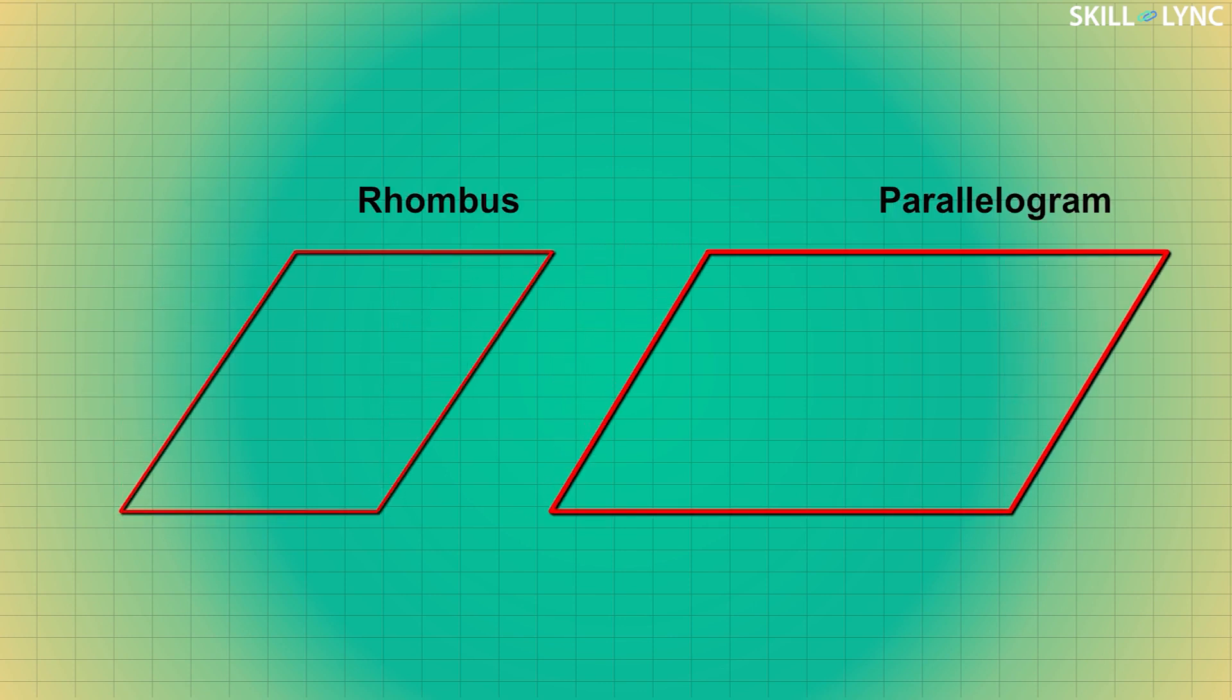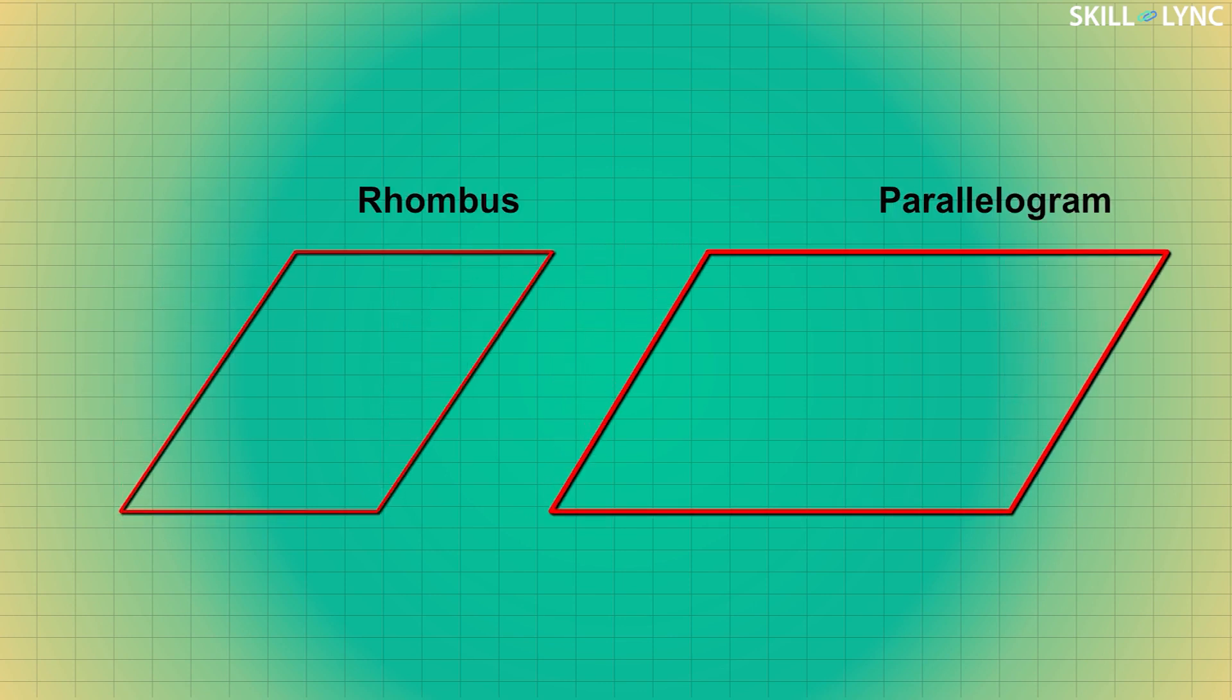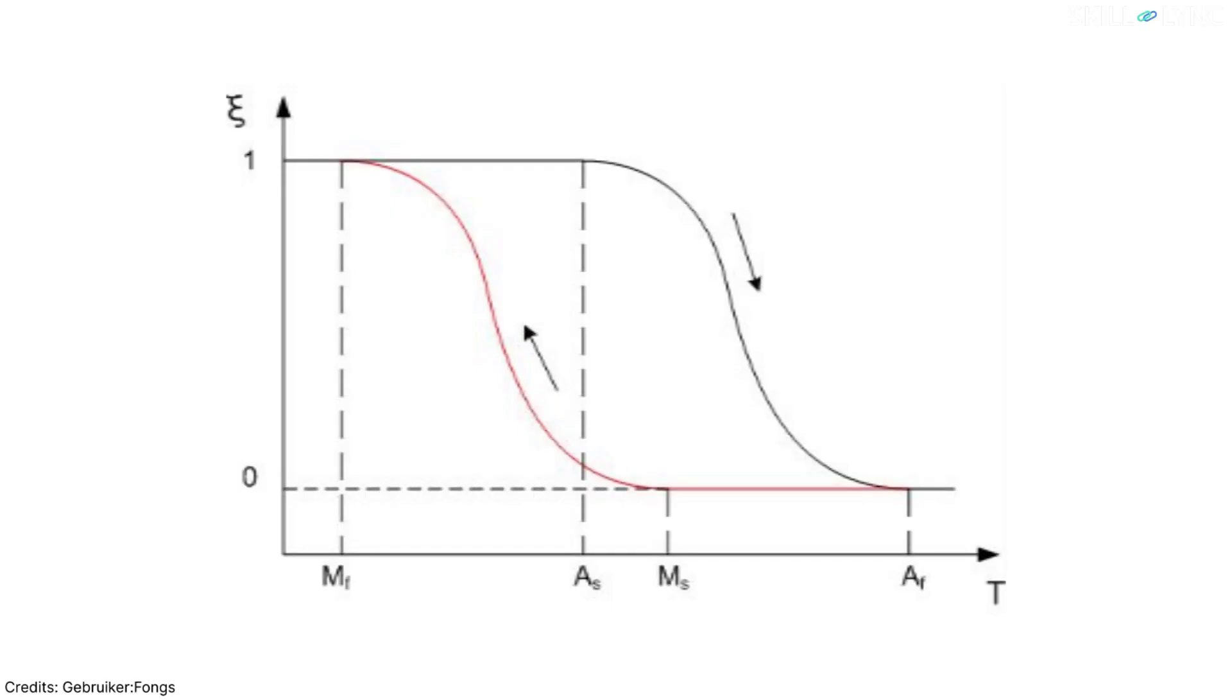Now let us plot the transition stages in a graph. The temperature at which the transition from martensite to austenite starts is noted as AS, and the temperature at which the transition finishes is noted as AF. Similarly, the starting and finishing transition from austenite to martensite are noted as MS and MF. This transformation exhibited by the shape memory alloys because of the applied temperature is known as shape memory effect.